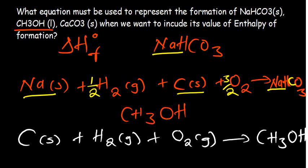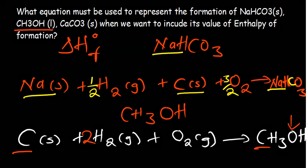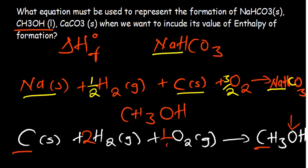We need to make sure everything is balanced. Carbon: we just have a single one — so it's balanced. Hydrogen: we have 4 atoms, so we put 4/2 (i.e., 2) in front of H₂ to balance. Oxygen: we have a single one, so we put 1/2 in front of O₂ — because 1/2 multiplied by 2 gives us 1. The equation is now balanced.